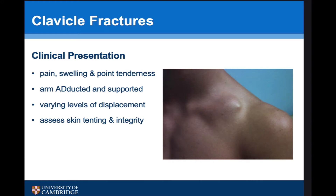The more displacement there is — particularly with shortening — the more issues they have with scapulothoracic dysfunction. As we saw in the last talk regarding protraction of the scapula, this can occur with the more displaced clavicle fractures, and it's important to assess skin tenting and integrity. Very rarely there can be issues with skin integrity, particularly if there's a very sharp point to the fracture.